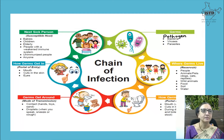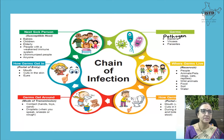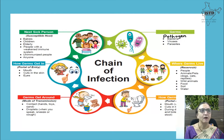The next person who gets sick is called the susceptible host. Susceptible hosts include babies, children, elderly people with weakened immune systems, unimmunized people, or anyone can be infected.